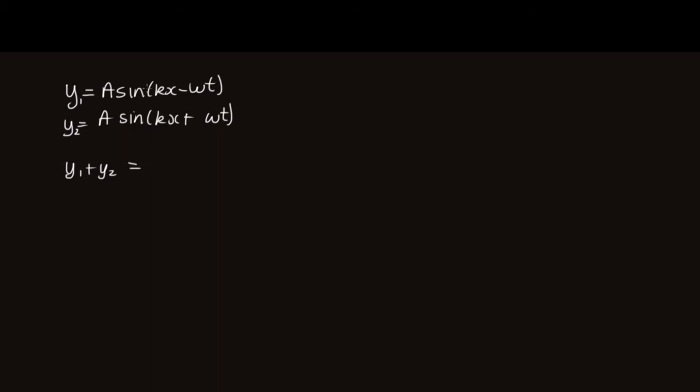So we're going to add together these two sine functions. And when we do that we're going to need to make use of one of the trigonometric identities which tells us that if we have sine a plus sine b, then that is equal to two sine of a plus b over two times cos of a minus b over two.